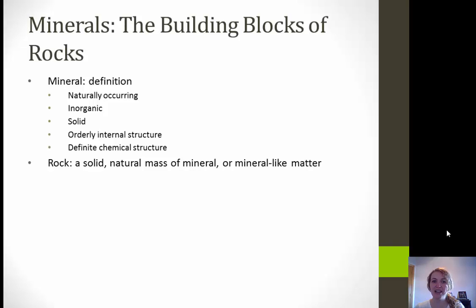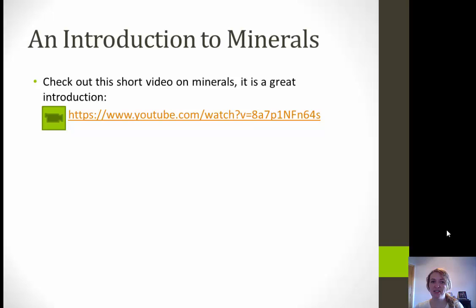So that's what a mineral is. What exactly is a rock? A rock is a solid natural mass of mineral or mineral-like material. The easiest way to distinguish the difference is that a mineral is one singular object of that material — if it's galena, you only have galena. A rock is going to be more than one mineral; it has to have at least two.